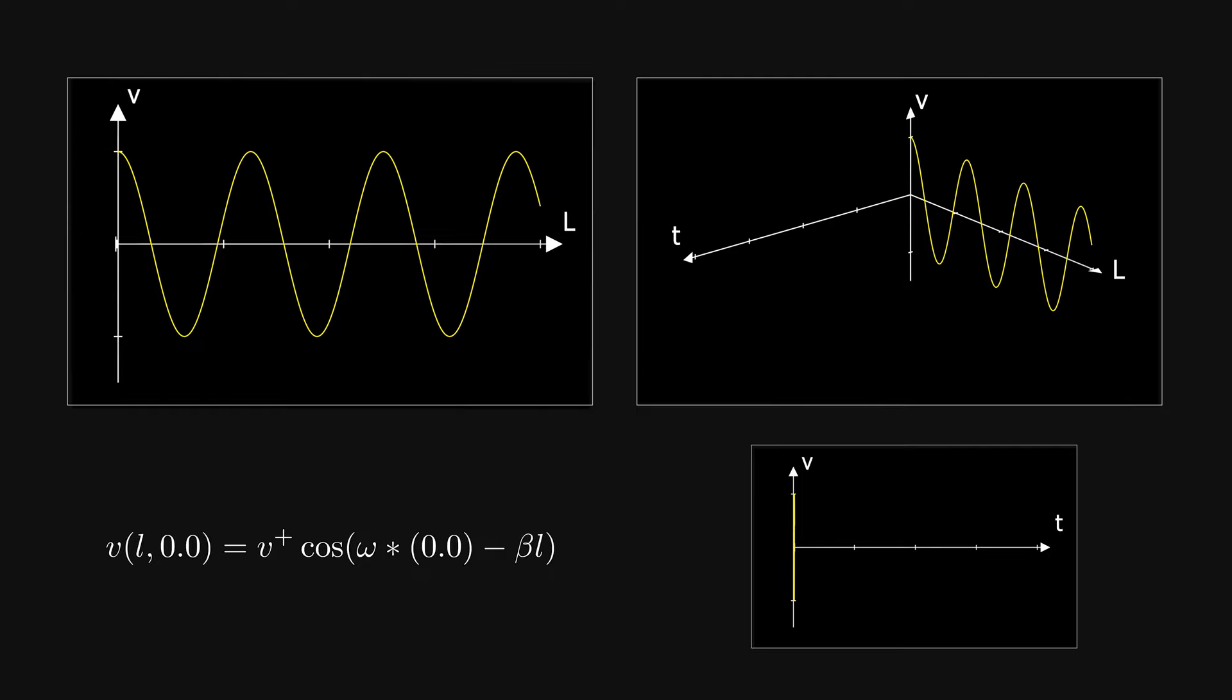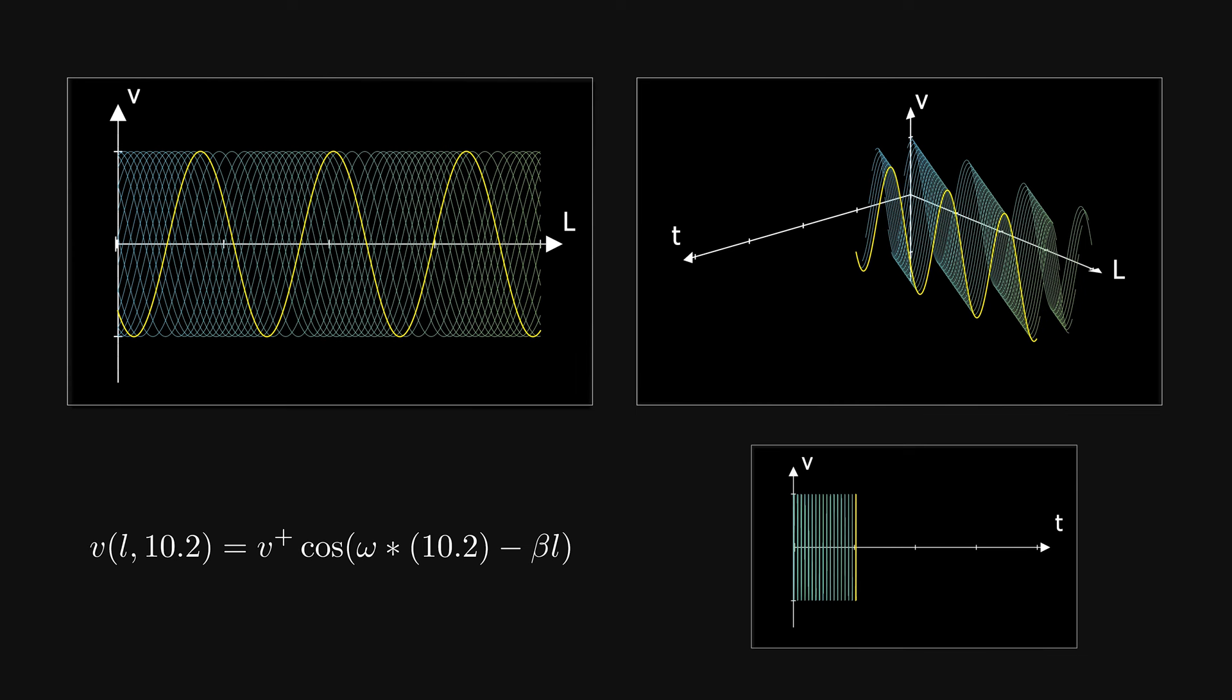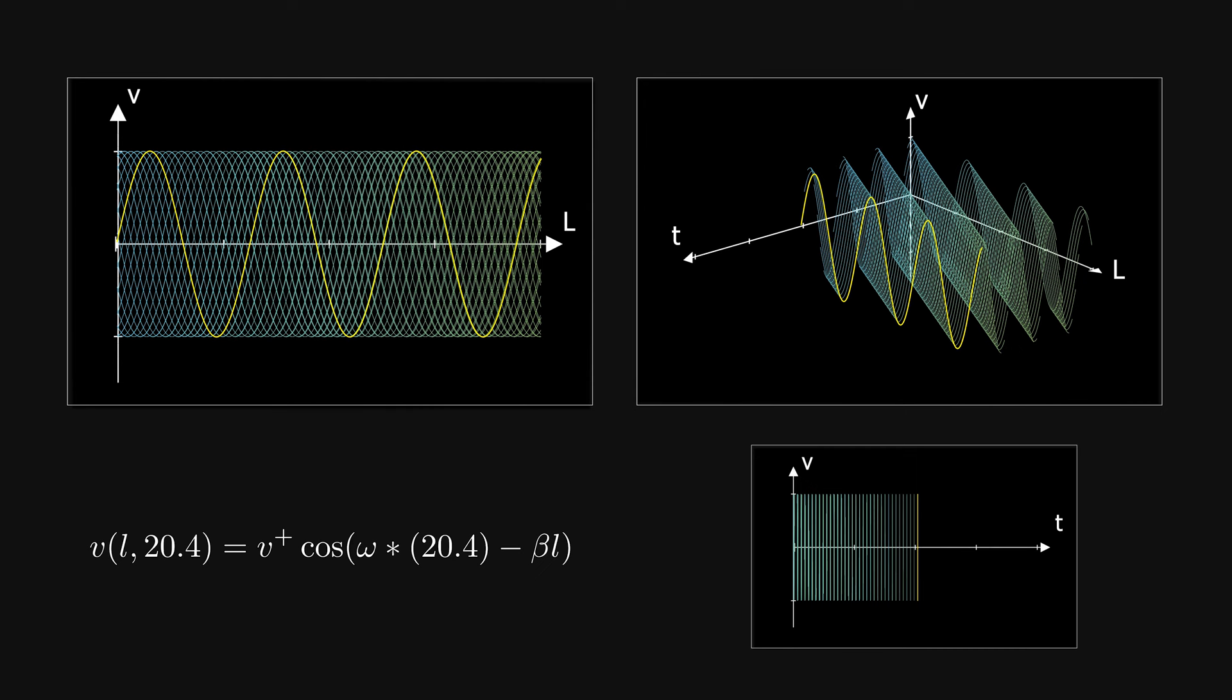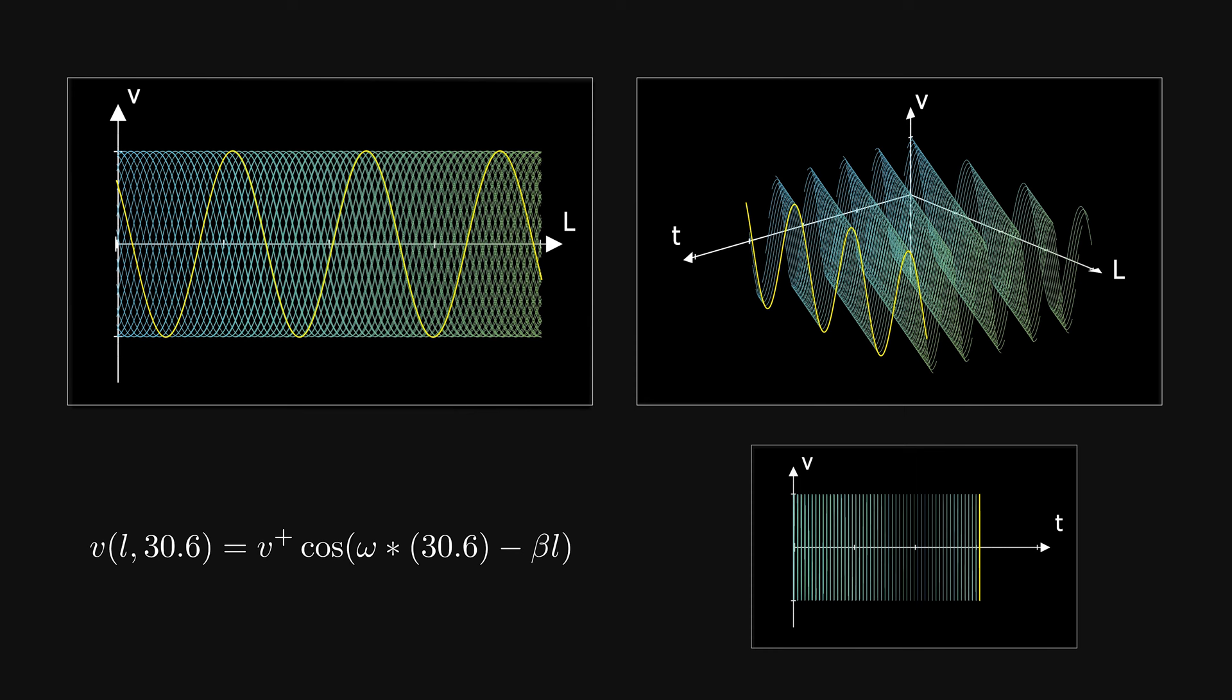By fixing the distance and varying the time, it feels like the signal is moving along the line. What we're doing here is just plotting the voltage variation along the line at successive instants of time. Here we assume that the line is lossless, meaning there is no attenuation in the signal while travelling through the line.